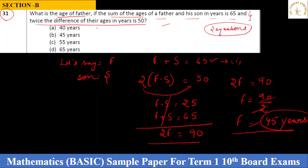So the final answer is option B — 45 years. It was a very easy question. You simply had two equations and had to solve them. I hope you understood it.